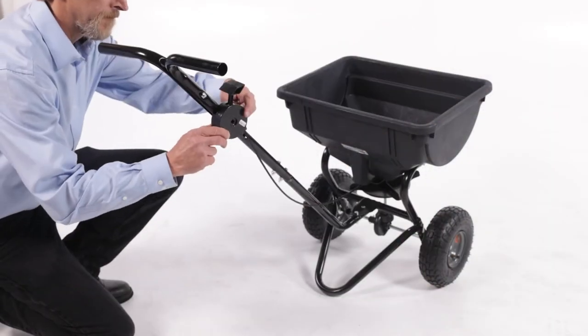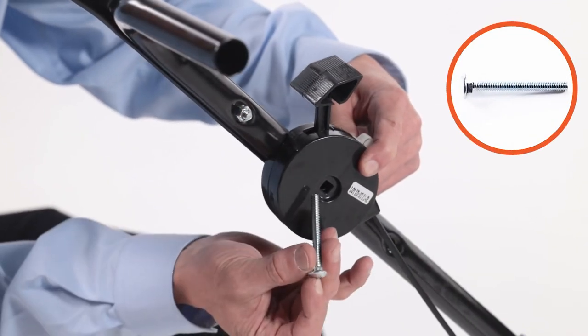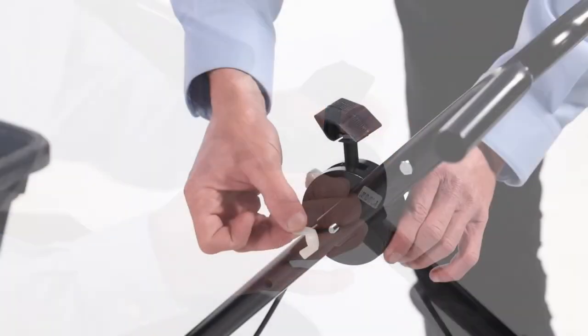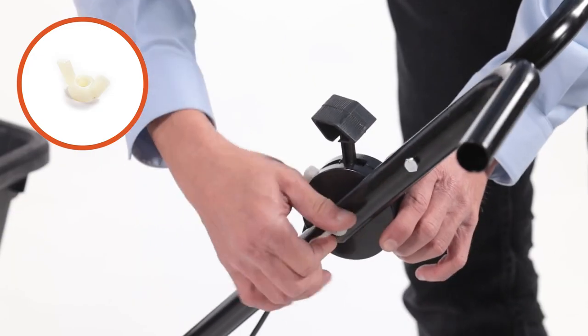Now, align the flow control handle, Part R, and secure it with a 1⁄4-inch by 2 1⁄2-inch carriage bolt, Part B, and a 1⁄4-inch nylon wing nut, Part G.